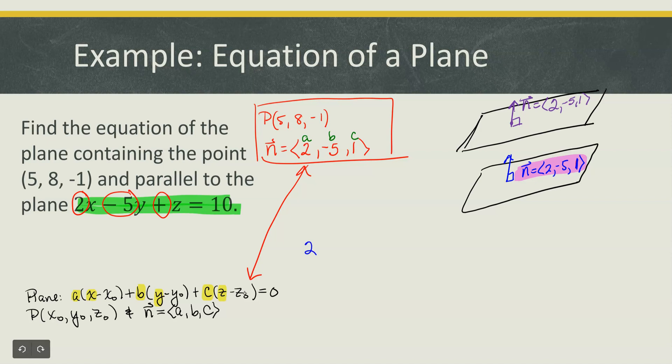So we would have 2 times x minus the x coordinate of the point, minus 5, so plus b times y minus the y coordinate of the point, plus c. I'm going to go ahead and write the 1 times z minus the z coordinate of the point and that should equal 0.